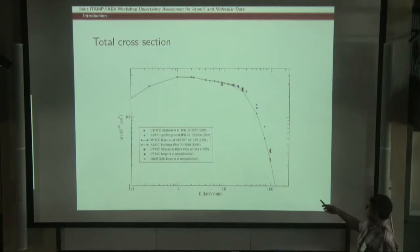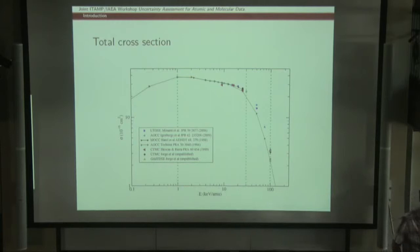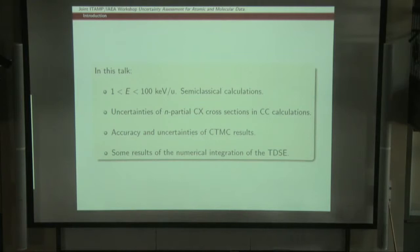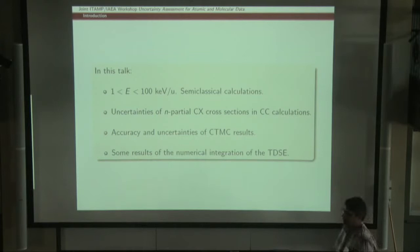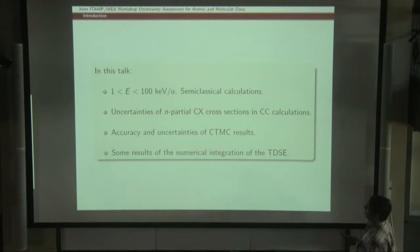The range of energies I am going to discuss is between 1 and 100 keV/u. I will concentrate on three particular energies: low energy at 1 keV/u, intermediate energy at 30 keV/u, and high energy at 100 keV/u. As mentioned before, the semi-classical method is essentially exact in this range, so I am concentrating on semi-classical calculations. I am going to discuss n-partial cross sections — not n-l-partial cross sections — and will discuss the accuracy and uncertainties of CTMC results.